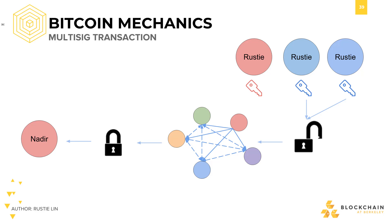In another example, I've set up a 2 of 3 multi-sig with myself. Instead of losing my private key and subsequently losing all of my funds, I have more than one point of failure. After losing one private key, I still have two of the three total keys, so I still have sufficient keys to access my funds in a 2 of 3 multi-signature scheme.